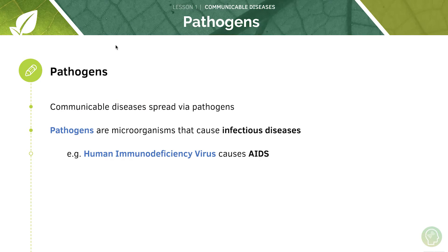Communicable diseases spread via pathogens, which are just microorganisms that cause infectious disease. A good example of a pathogen would be human immunodeficiency virus, which causes AIDS. There are also non-communicable diseases which can't be passed on to another organism — these are often chronic, long-term diseases, and examples are cancer and diabetes.